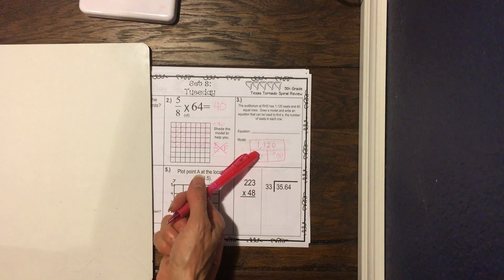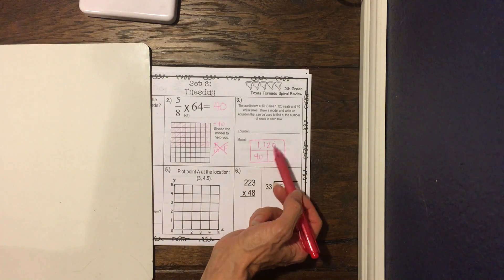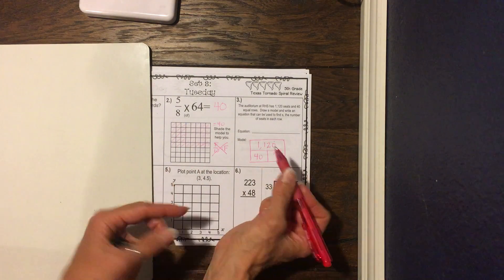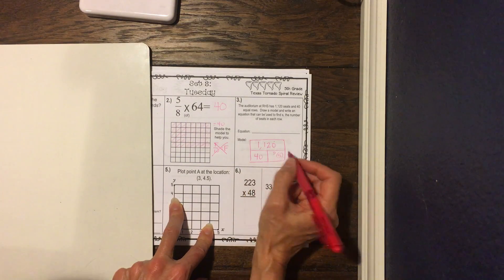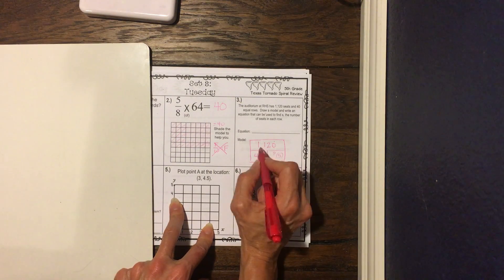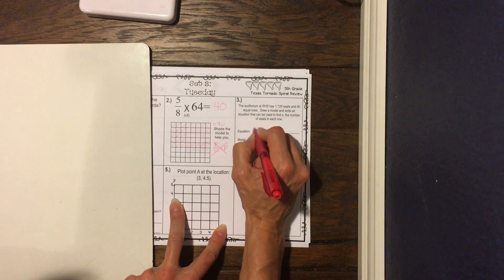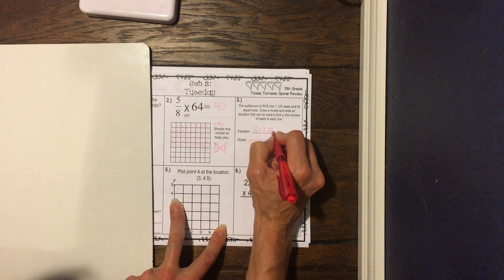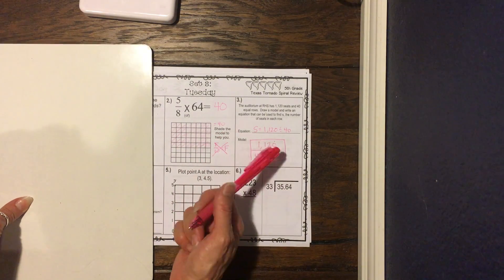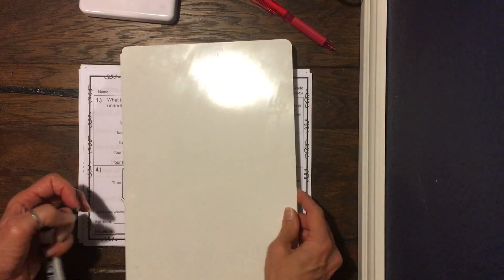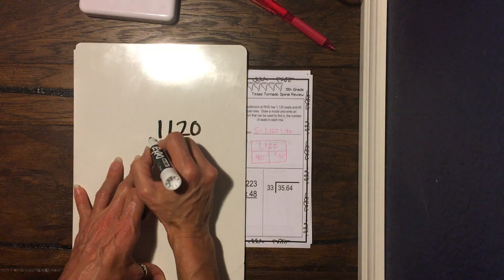So if we're looking, and we know this is part, part, whole, we know this is either addition or subtraction, or we know it's multiplication and division. Well, we know it's not addition and subtraction, so we know it's multiplication and division, and if this is our whole, we don't have both of these numbers, so we know we can't multiply, so we know we're gonna be dividing 1,120 divided by 40. So our equation is gonna be S equals 1,120 divided by 40. So that's the equation that we're gonna write. We're looking for number of seats. So we're gonna take, and we're gonna do the math, and we're gonna do 1,120 divided by 40.